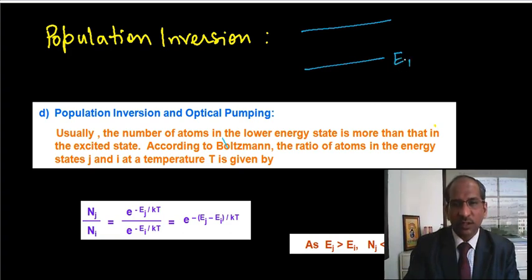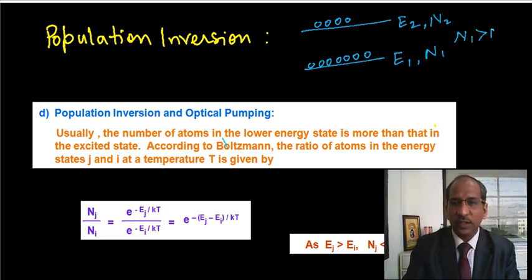You know this is the ground state, this one is the excited state. Here this statement says that in general, a large number of atoms remain in the ground state and a small number, comparative to the ground state, remain in the excited state. It means N1 is greater than N2 in general.